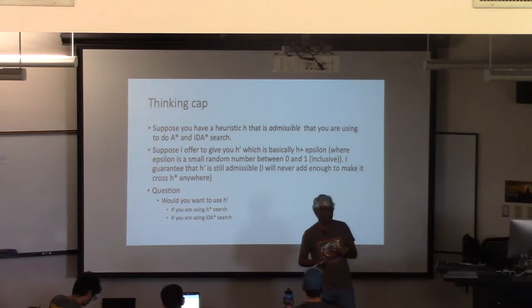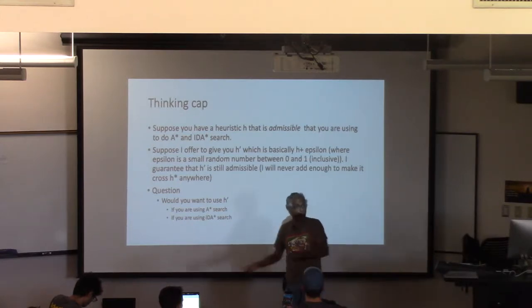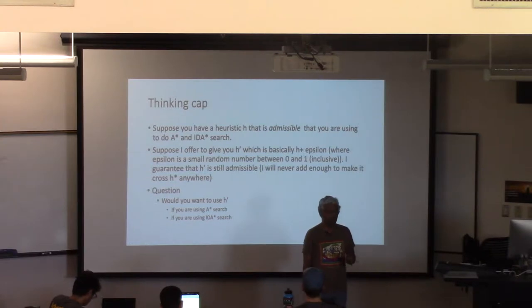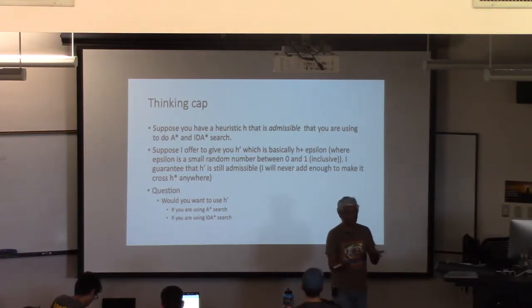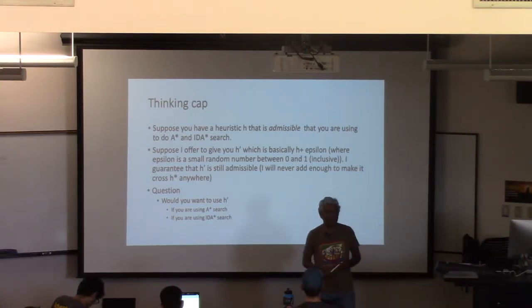That's a very good question. So I'm basically taking h and then giving you h of n for different values of n. So for every place, I'm just adding a small random number, making sure that it never crosses h star. So which actually means, for example, at the goal node, I should make sure that I'm only adding zero.